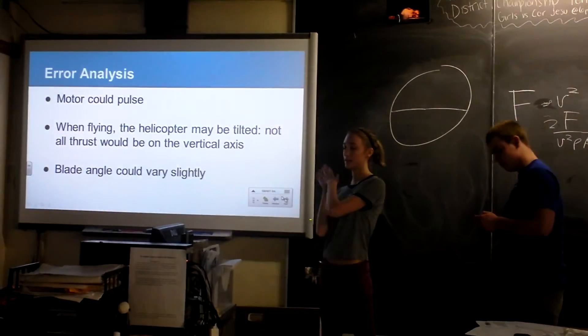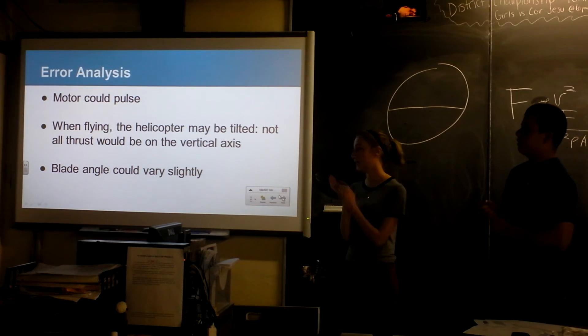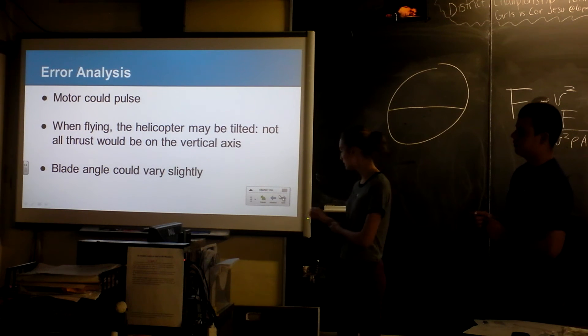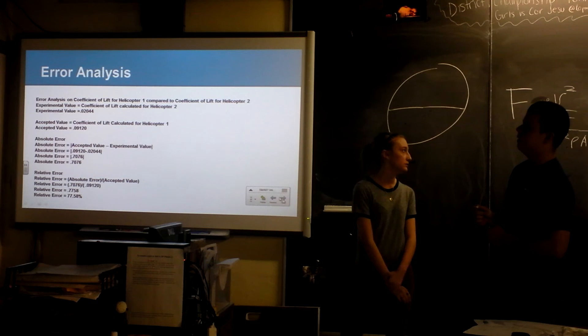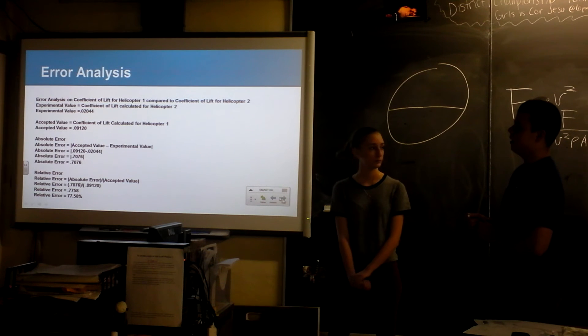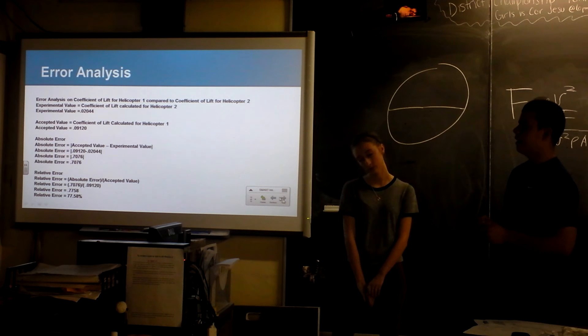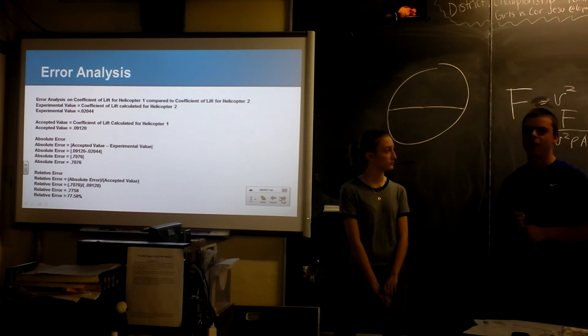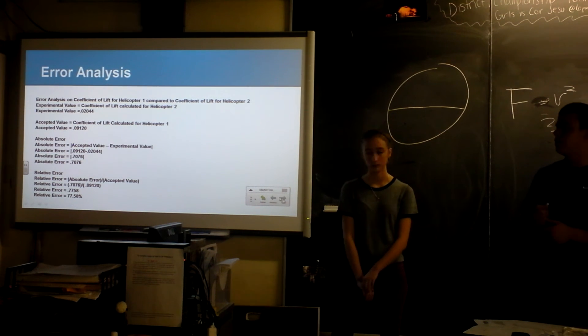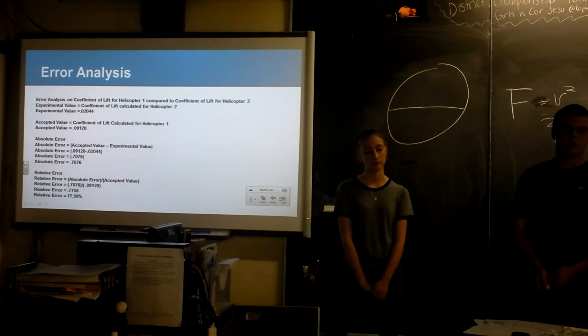Some sources of error: the motor could pull. And then when flying, the helicopter could be tilted, and then not all of the thrust would be in the vertical axis. And then the blade angle could vary. So we didn't really have error analysis. This is more of a comparison of the coefficients. I'm not saying they should be the same, but there was a 77% difference between them. It was two different helicopters. And one of the helicopters, it has two blade sets. And we assumed that the blades counter-rotate to counteract torque, so the helicopter just doesn't spin madly. So we said each of those blades counts for half of the lift force on the helicopter.